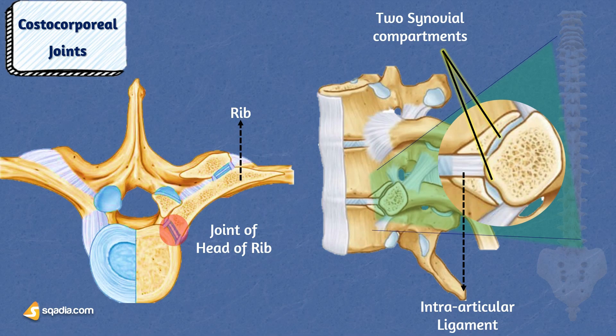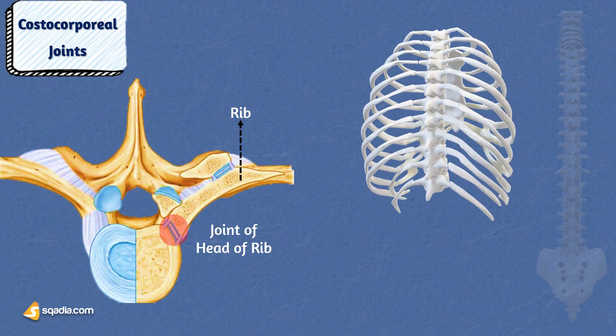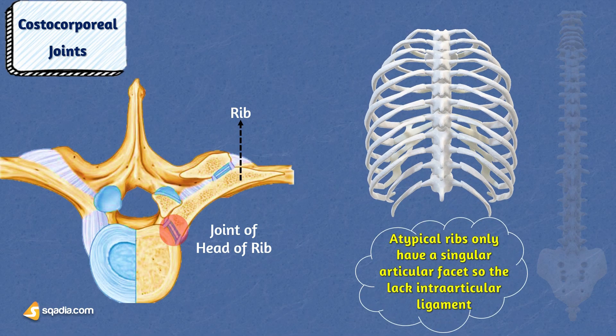The two synovial compartments are separated by an intra-articular ligament that links the crest of the rib head to the adjacent intervertebral disc. However, there is just one articular facet in atypical ribs, which include the 1st, 11th, 12th, and occasionally 10th ribs, and they only articulate with the respective vertebral bodies. These ribs are consequently devoid of the intra-articular ligament.